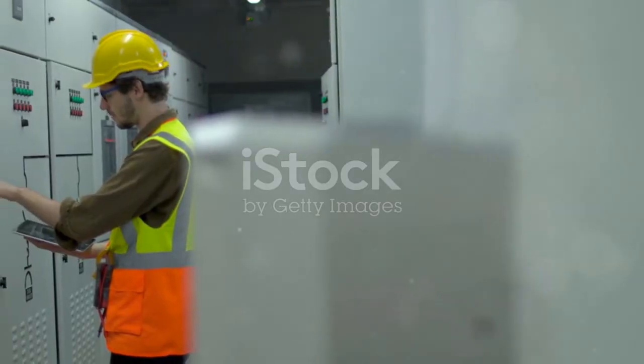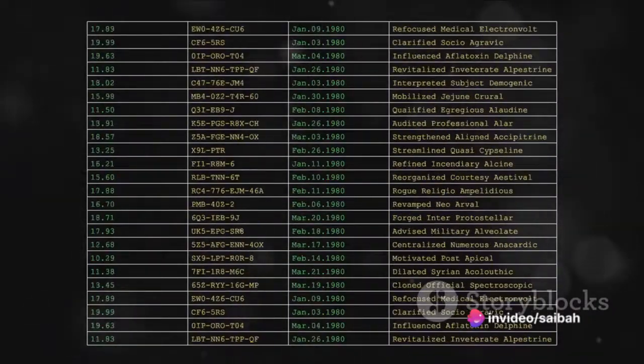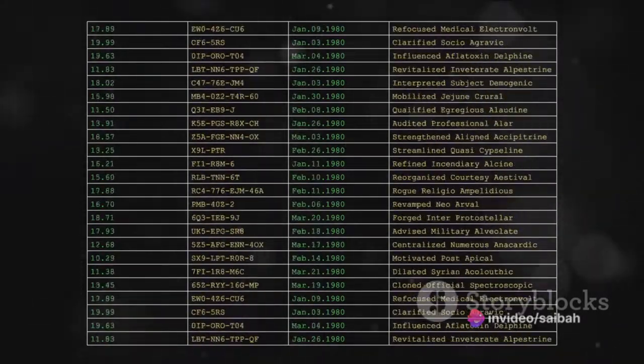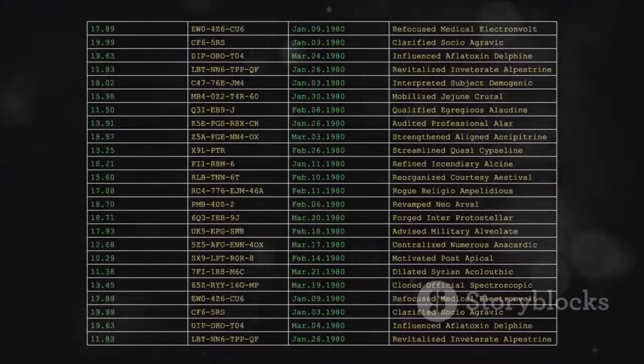One such standard which has stood the test of time and is widely used even today is the 4 to 20 mA current loop. This might sound complex, but let's break it down. A 4 to 20 mA current loop is a two-wire communication method used mainly in the industrial sector.